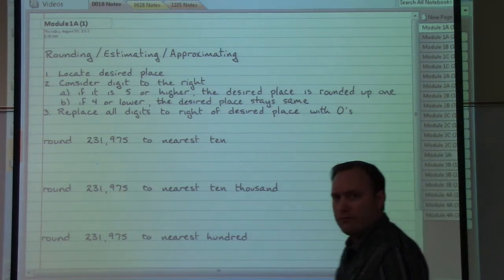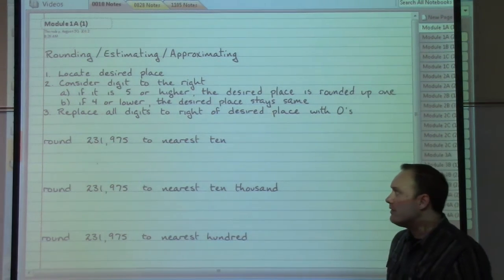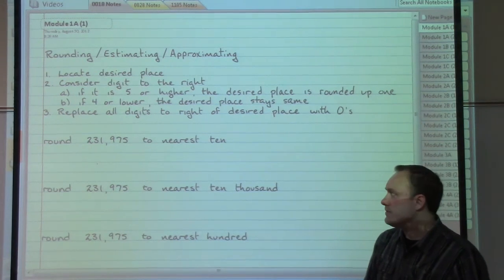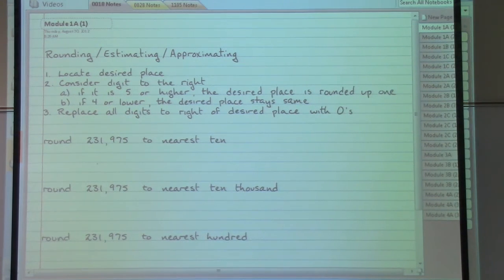Rounding whole numbers might also be referred to as estimating or approximating. In order to do this, we want to work through the three steps that are presented here, starting first with locating the desired place mentioned in the rounding instructions.